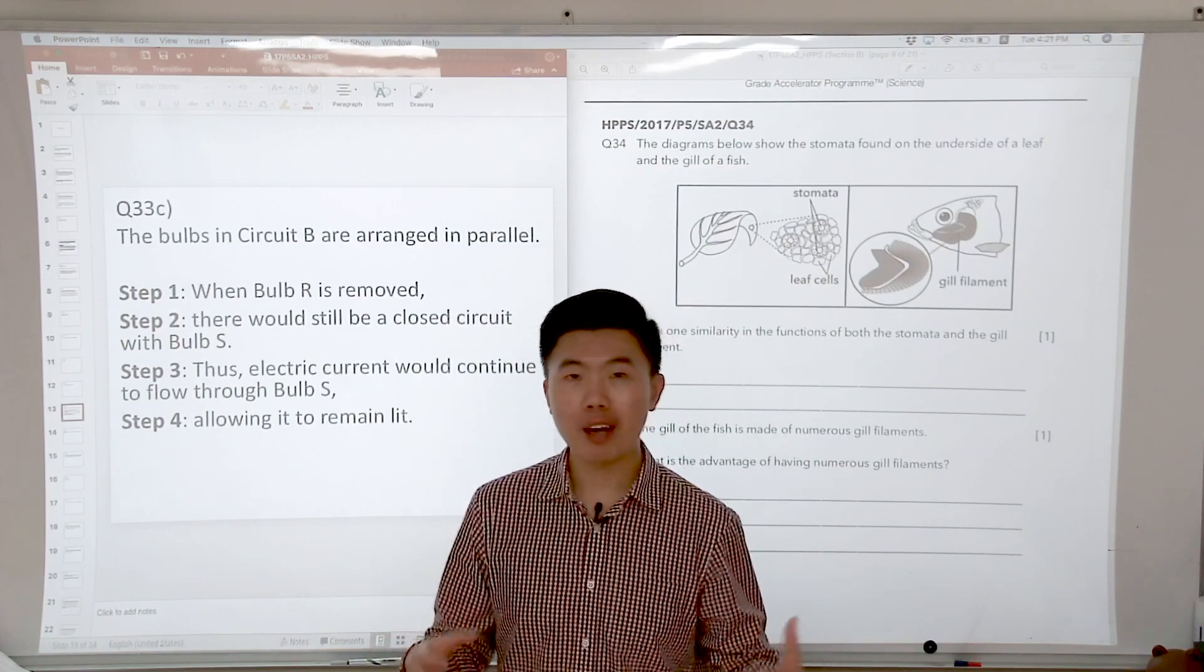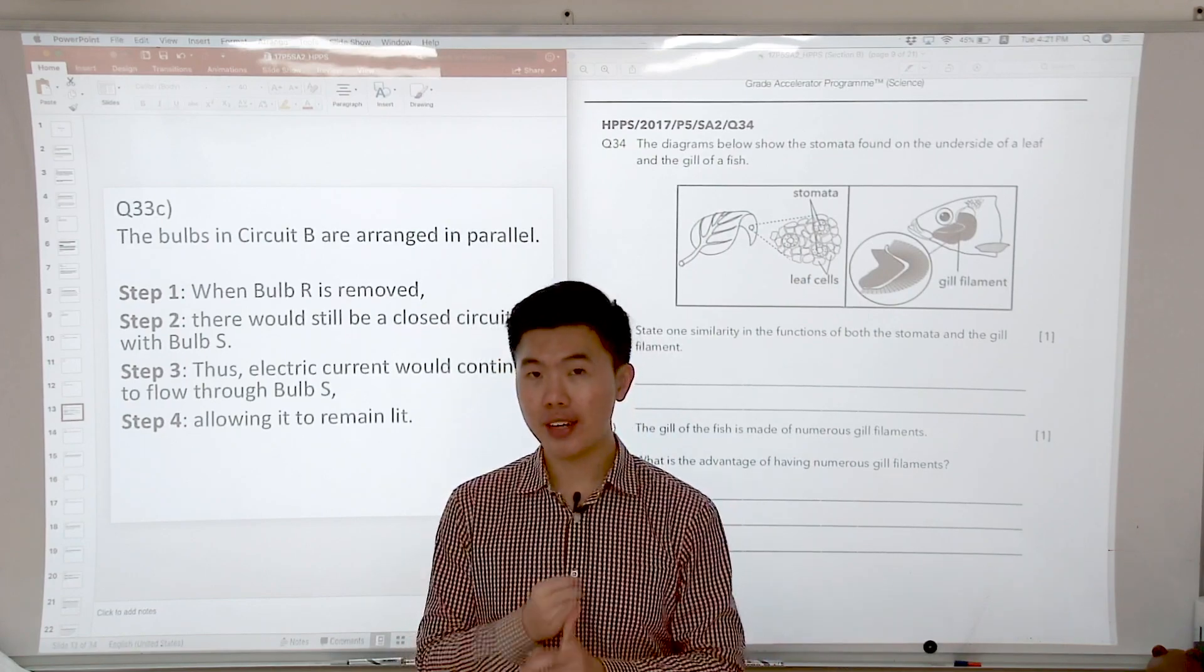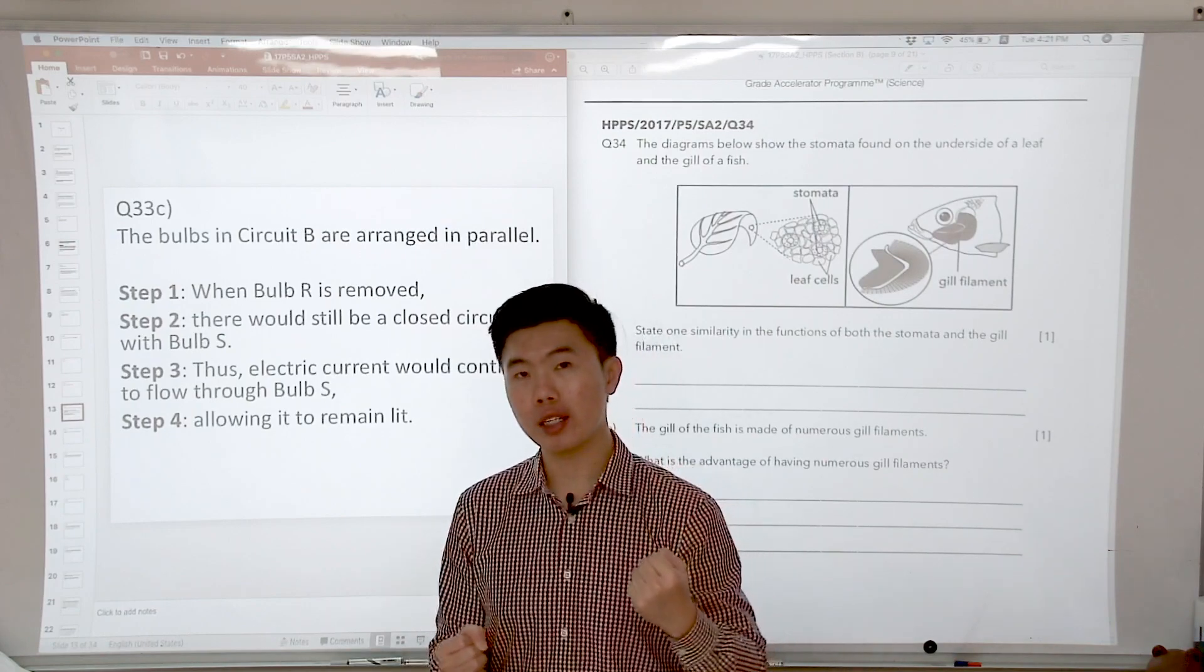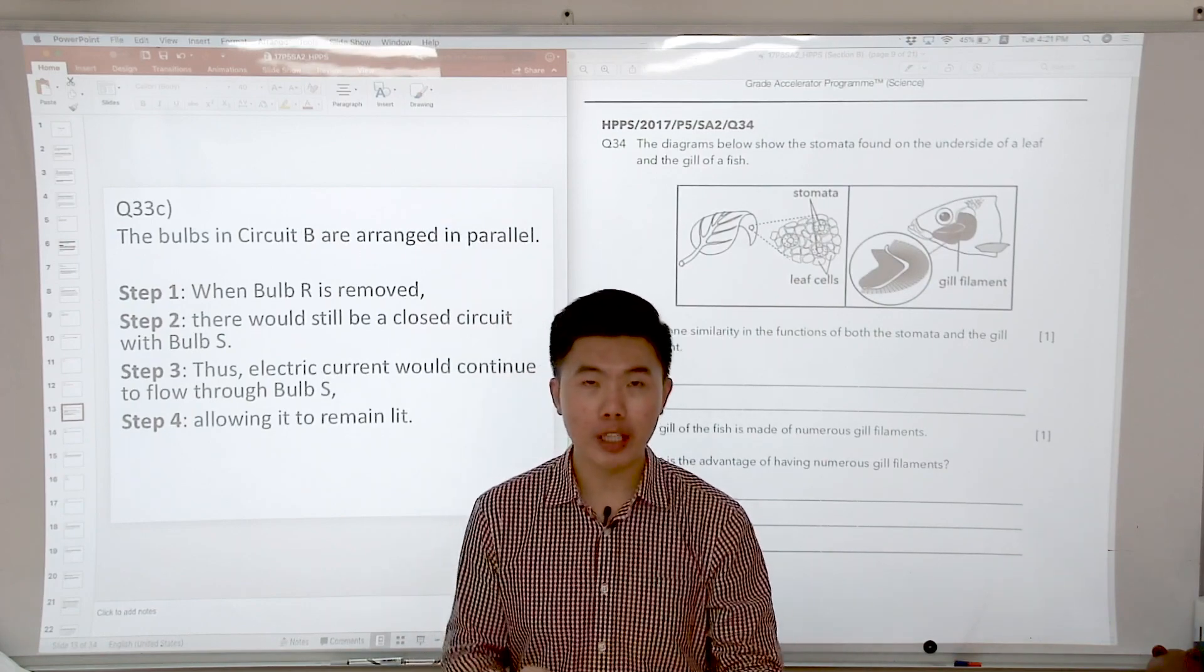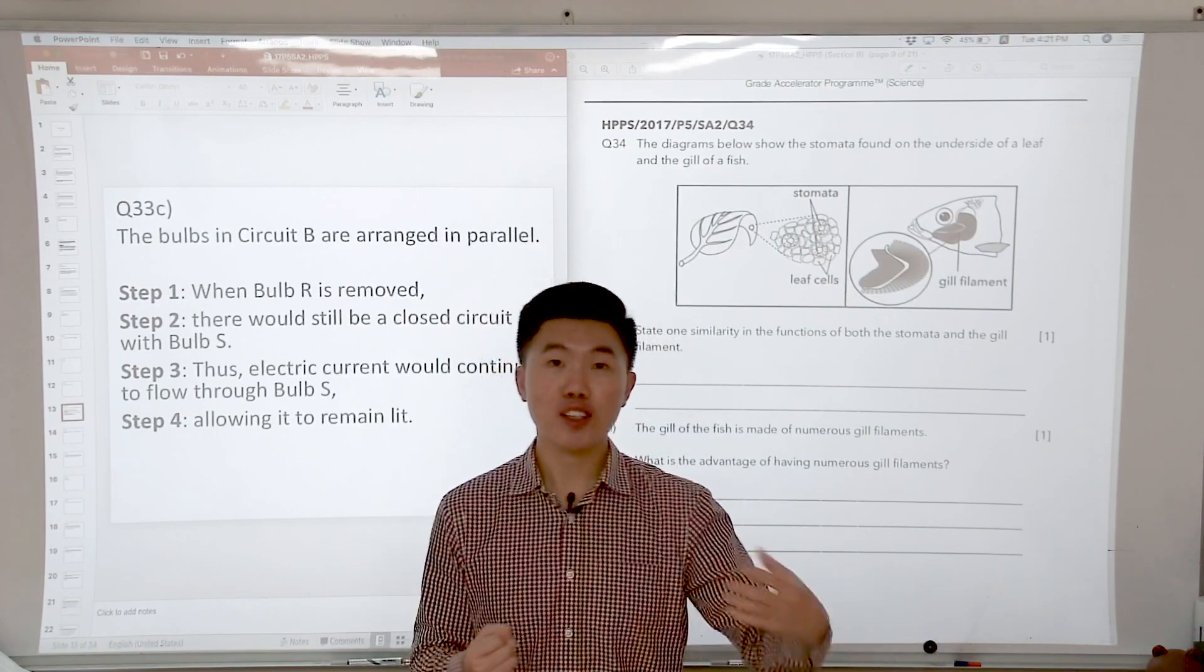Are you able to recall what kind of gases are being exchanged at the stomata? The first one is oxygen. Oxygen is taken in through the stomata for the plant to carry out respiration to release energy, and it releases carbon dioxide through the stomata as well.